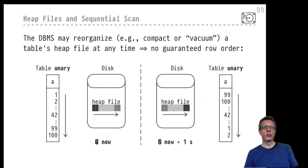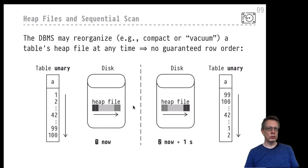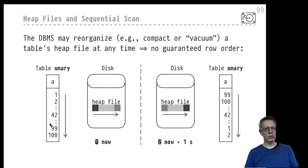Here we are again, continuing our discussion of heap files in relational database systems, in this case PostgreSQL. Recall that heap files are used on disk to store the contents of the rows of a relational table. Row contents of a relational table correspond with heap files on disk. Let's take a closer look.